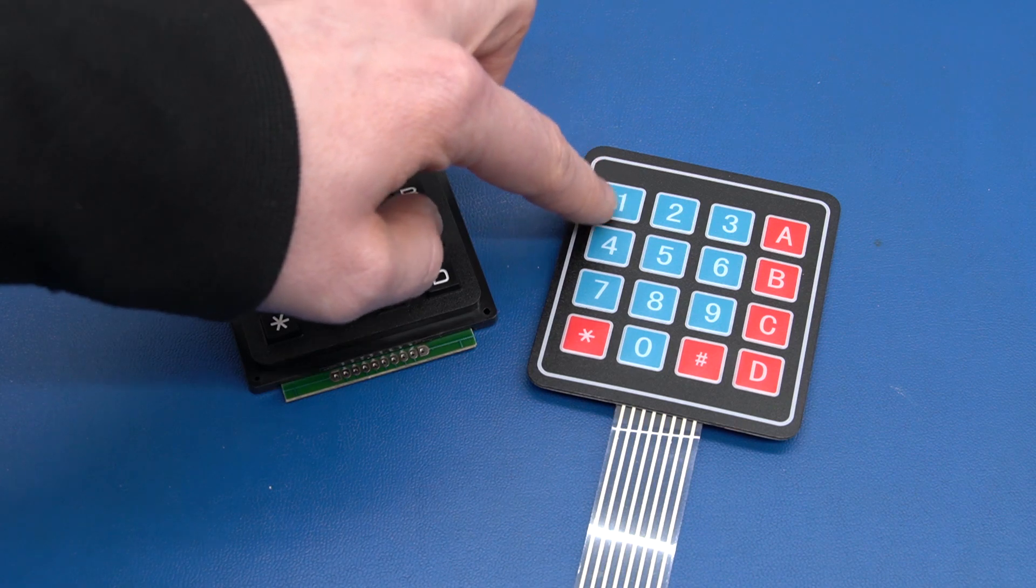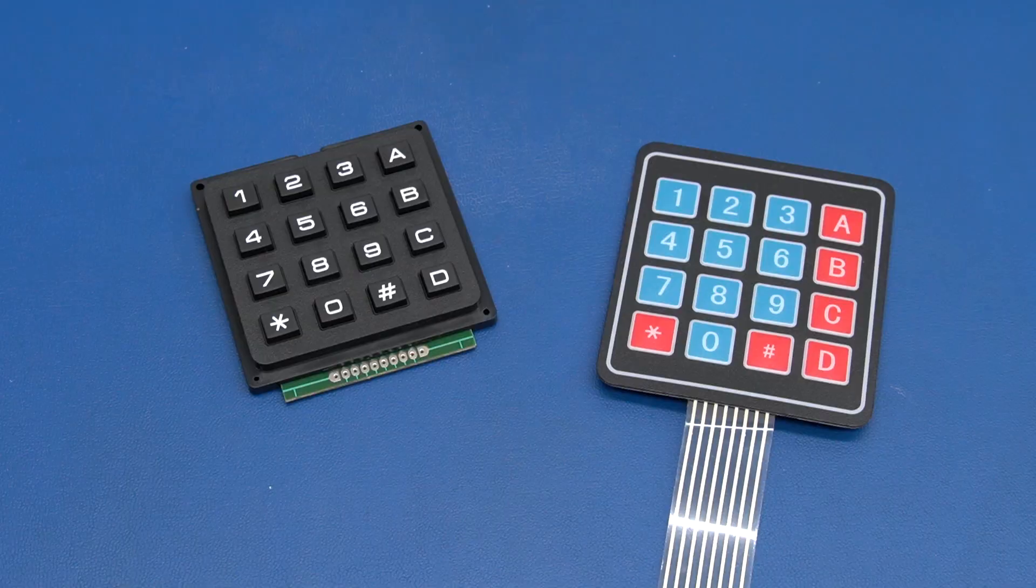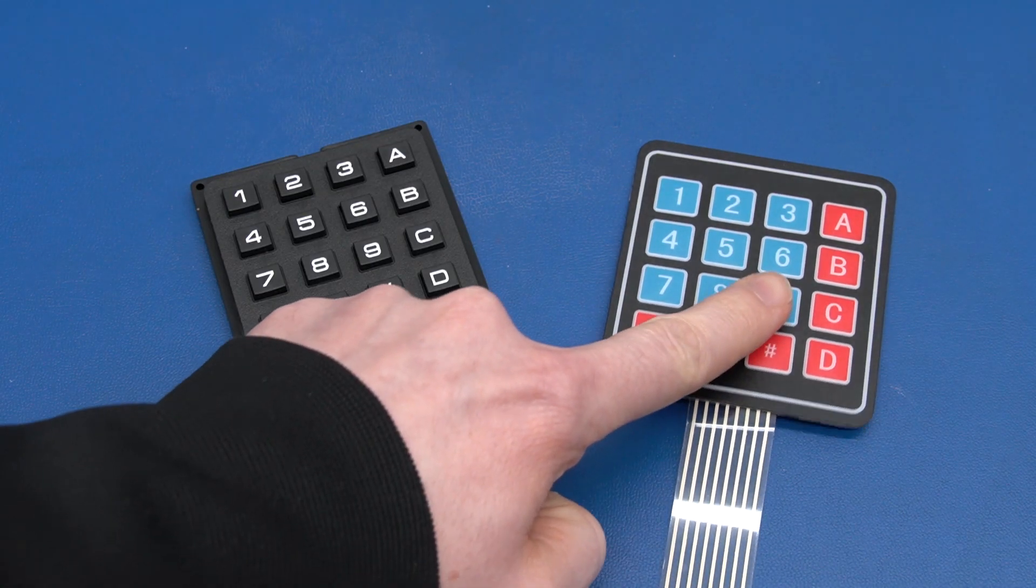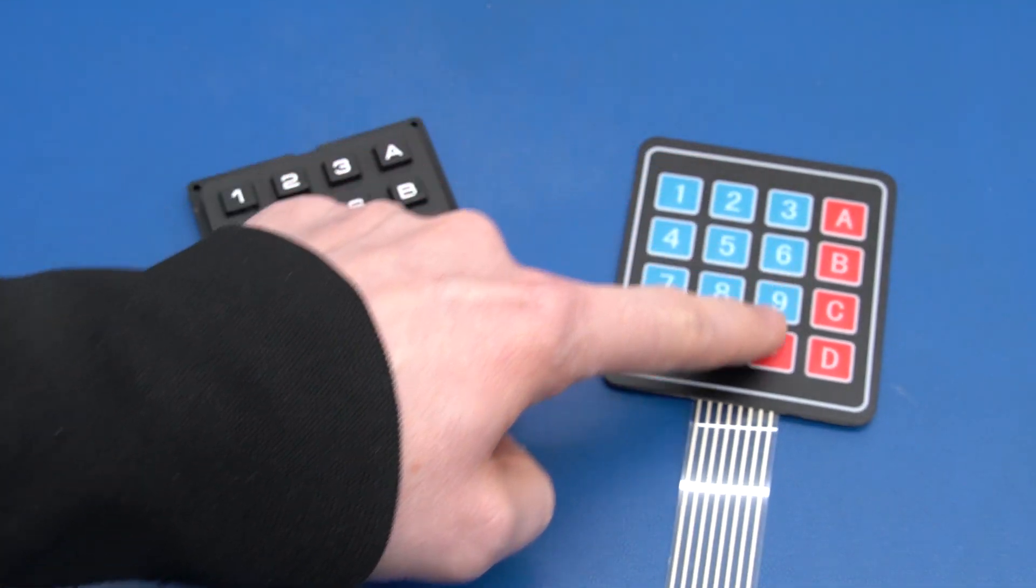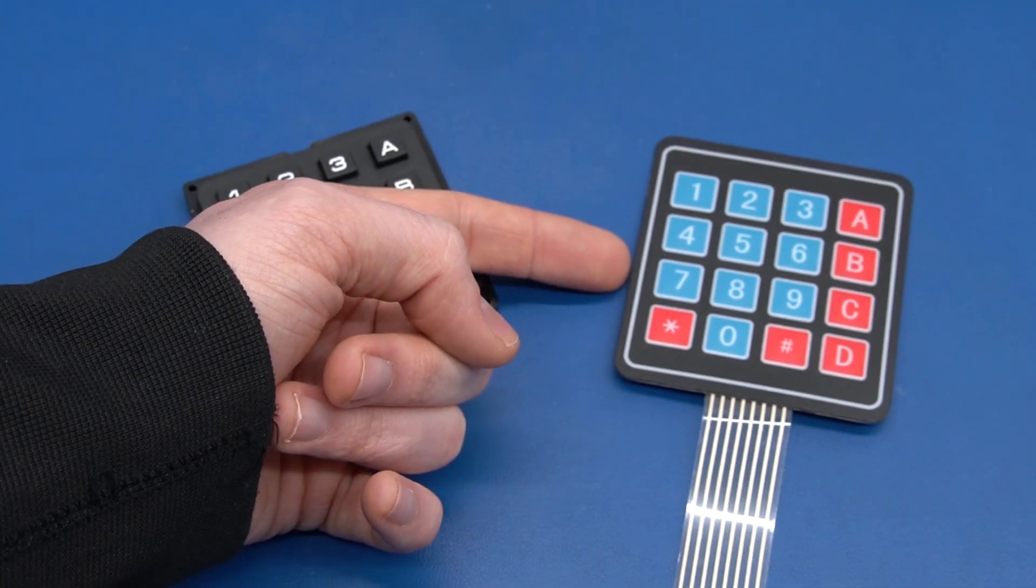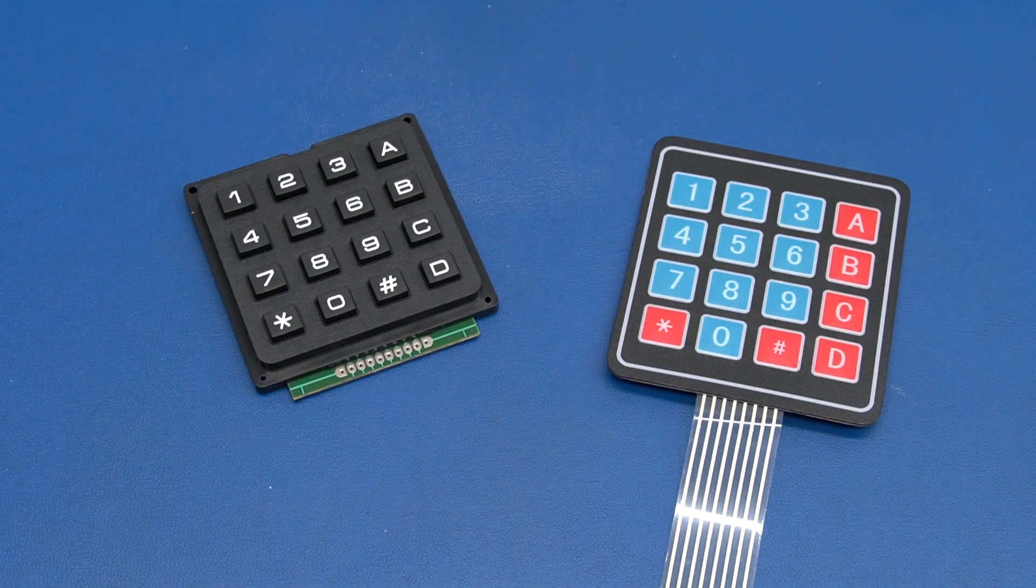All of these switches are combined in rows and all of these in columns. So when you press the number 9 for example, you will combine the line from this column with the line from this row. And that's how you can detect it.